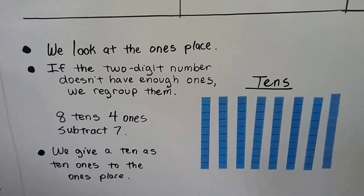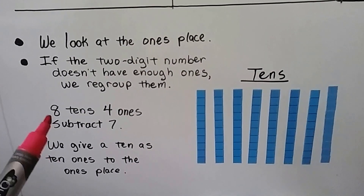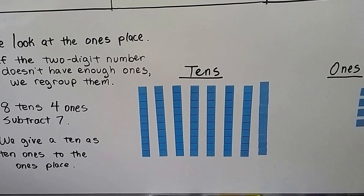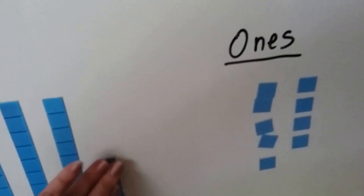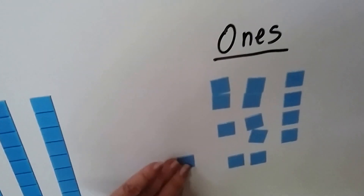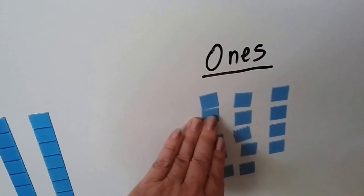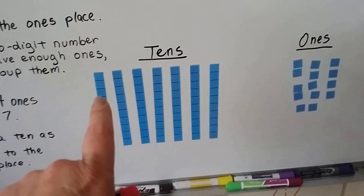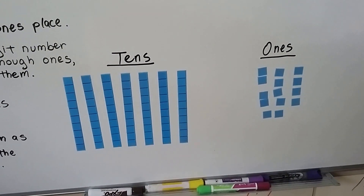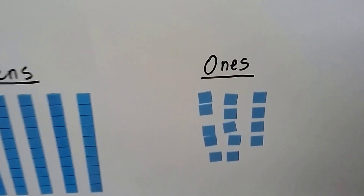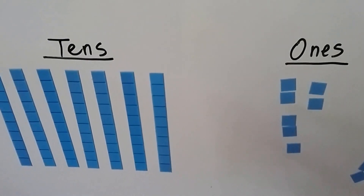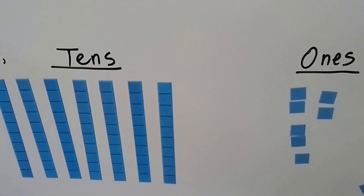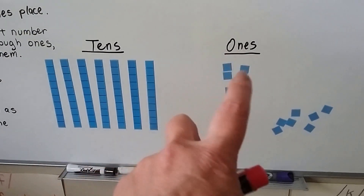When we look at the ones place, if the two-digit number doesn't have enough ones, we regroup. We have 8 tens and 4 ones. If we need to subtract 7, we give a 10 as 10 ones to the ones place — we just move over one of the tens to the ones place. Now instead of 8 tens and 4 ones, we have 7 tens and 14 ones. Now we can take 7 away: 4, 5, 6, 7. And how many are left? 7 tens and 7 ones.